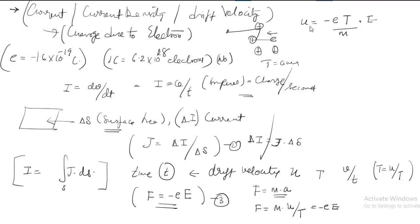Here T is the average time between collisions — the time interval during which you are observing the velocity. The velocity observed during this interval is the drift velocity. The current density J, defined as current per unit area, can be written as rho_V times U, where rho_V is the charge density.